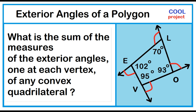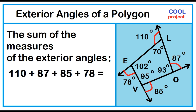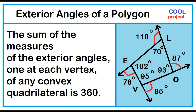The measures of the exterior angles are 110, 87, 85, and 78. The sum of the measures of the exterior angles is 360 degrees: 110 plus 87 plus 85 plus 78 is 360 degrees. Just like convex triangles, the sum of the measures of the exterior angles, one at each vertex of any convex quadrilateral, is 360 degrees.